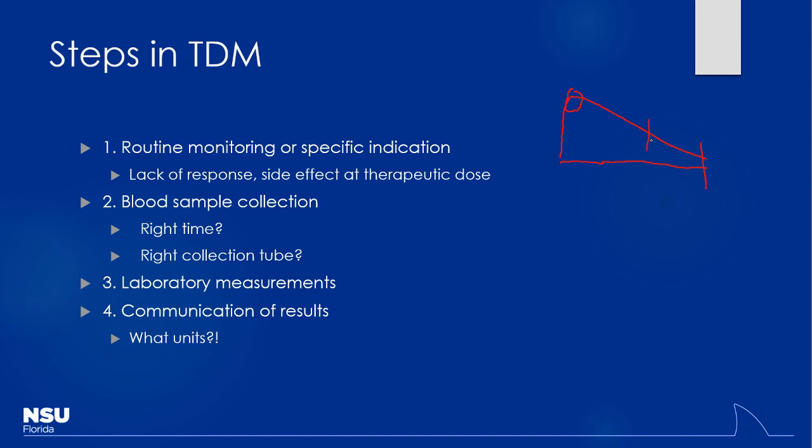Sometimes tubes are heparinized — heparin is an anticoagulant, it thins the blood. If you were measuring the blood's ability to clot and put it into a heparinized tube, it would look anticoagulated when it may not be. The lab can make mistakes sometimes — machines aren't running correctly — and that needs to be communicated out to you. Then there's communication of results, whether it's high, low, or in between. It's really important to keep your units straight.